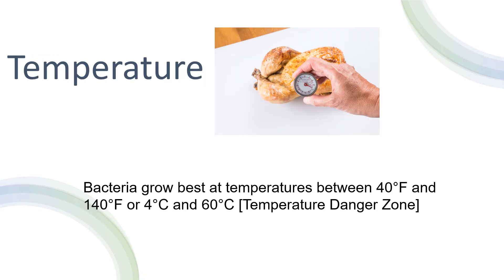The fourth letter is T for temperature. Temperature plays a crucial role in controlling the growth of bacteria. Bacteria grow best at temperatures between 40 degrees Fahrenheit and 140 degrees Fahrenheit, or 4 degrees Celsius and 60 degrees Celsius — this is called the temperature danger zone. Cooked food should be stored at temperatures below 40 degrees Fahrenheit and above 140 degrees Fahrenheit, and a food thermometer should be used to ensure that food is cooked to the appropriate temperature. For more information regarding the temperature danger zone, check our video in the link added in the description.